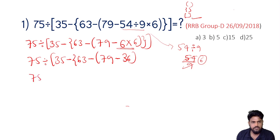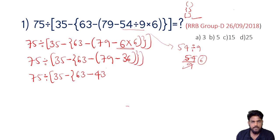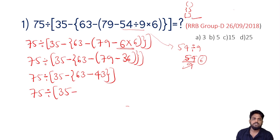Next, 75. 35 minus 63, minus 79 minus 36 is 43. 43. 75 divided by 35, 35, 35. 63 minus 43.